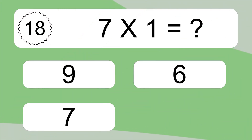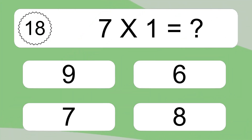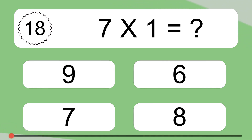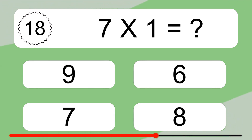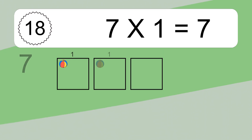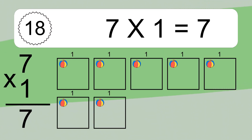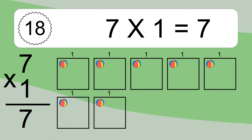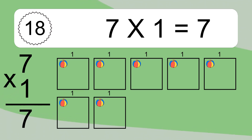7 times 1 equals what? 7 times 1 equals 7. We have 7 boxes, and each box has 1 colorful ball inside. If you count all the balls in all the boxes together, you will have 7 times 1 balls. This equals 7 balls.